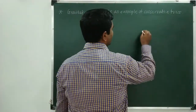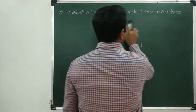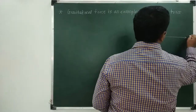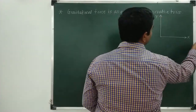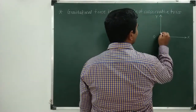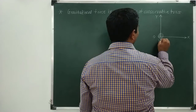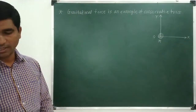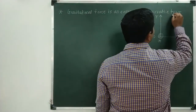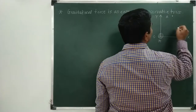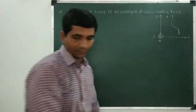Consider a reference system with an x-axis and y-axis. This is my y-axis and this is my x-axis. At the origin there is a body kept whose mass is capital M. So there is a body of mass M placed at the origin. And there is another body which is moving from point A to point B.